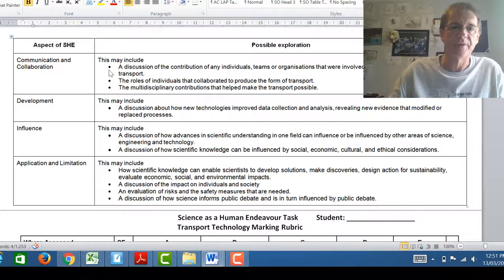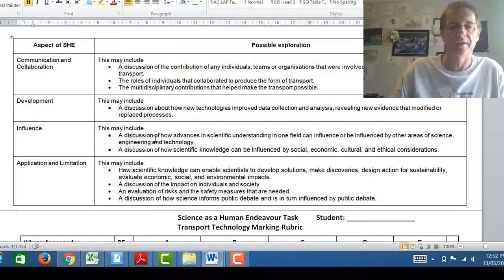So communication and collaboration. There's some examples there of how you can do that. Development, influence, and application limitation. So you don't need to do all these. A couple of these dot points will actually be fine. Okay. We've actually suggested you focus on the influence that society might have had on actually getting this done or the influence afterwards that this transport had on society.